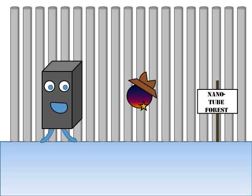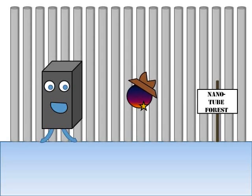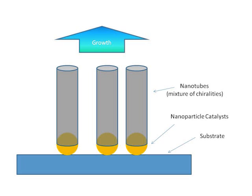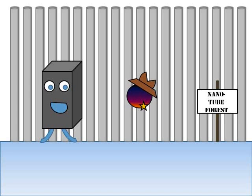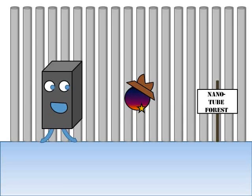To grow nanotubes, like the trees in this here forest, you can use nanoparticle catalysts. Nanoparticles with different compositions, such as varying mixtures of iron and nickel, will grow nanotubes with different distributions of chirality. However, you can't yet grow nanotubes with only one chirality.